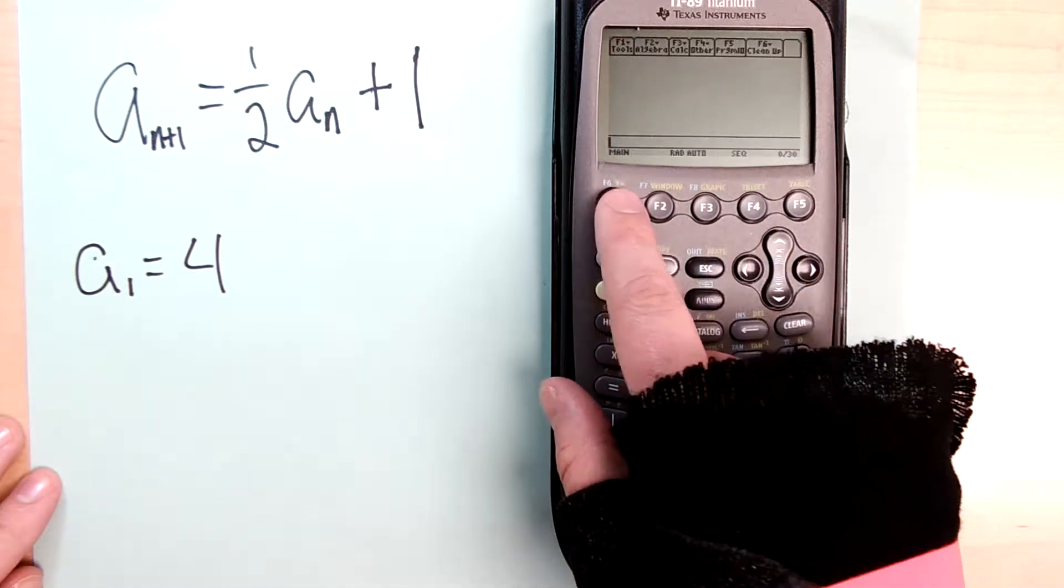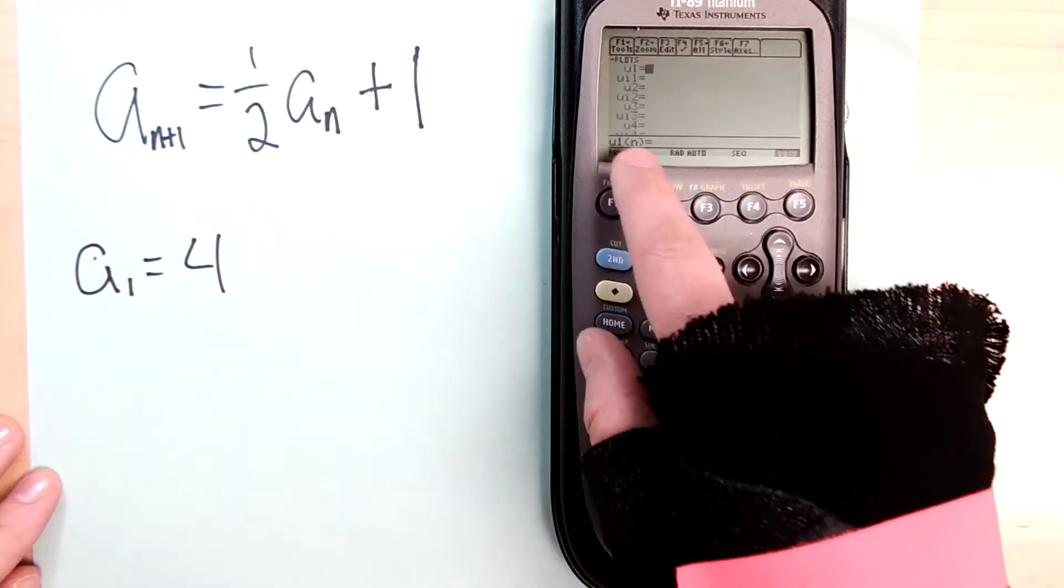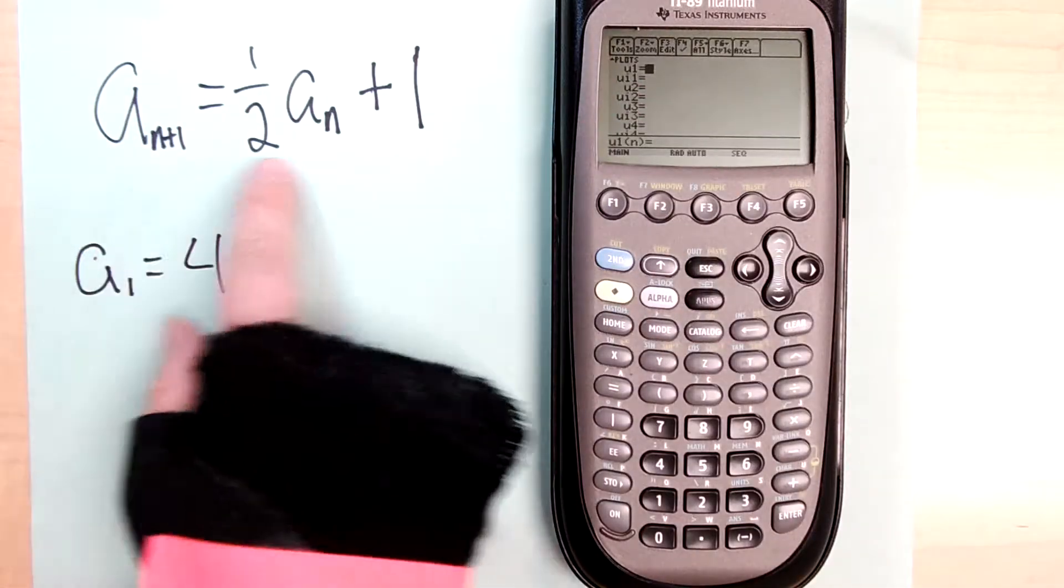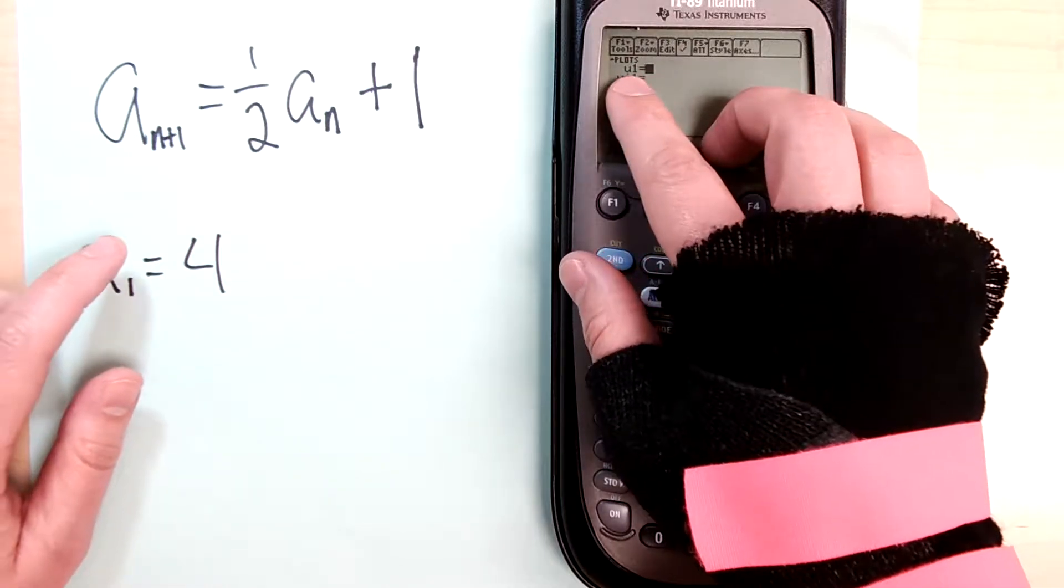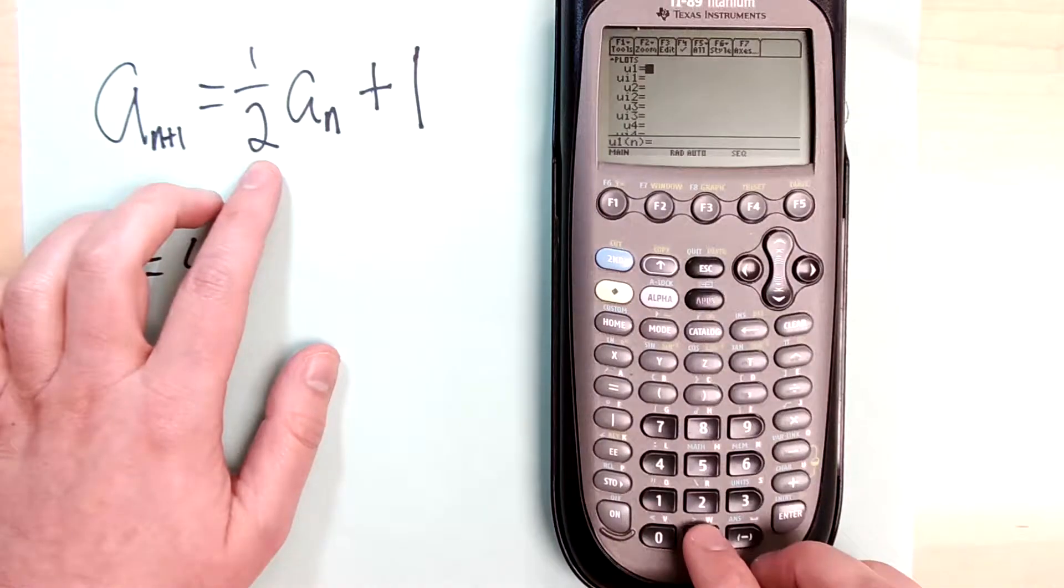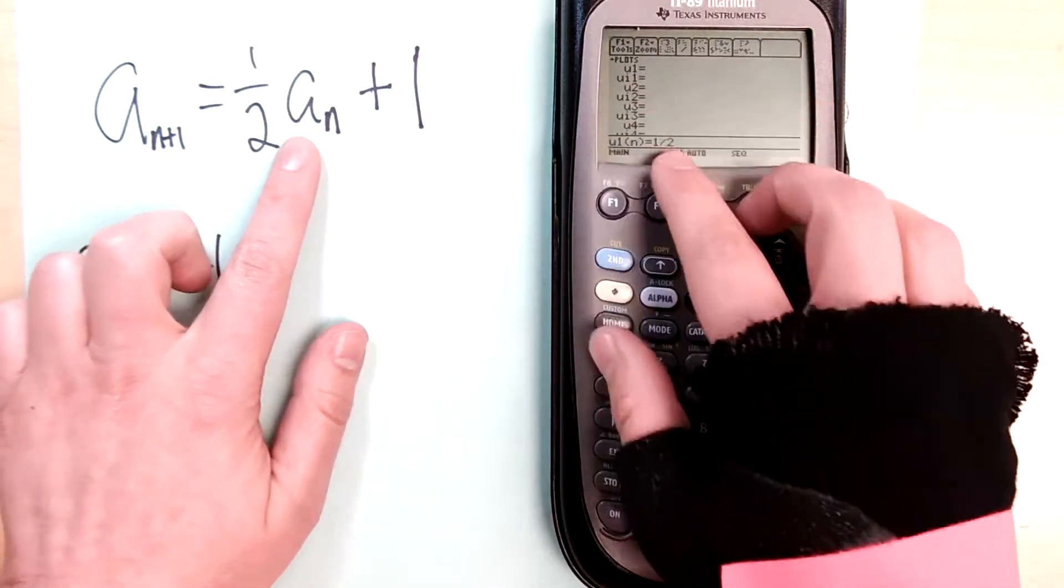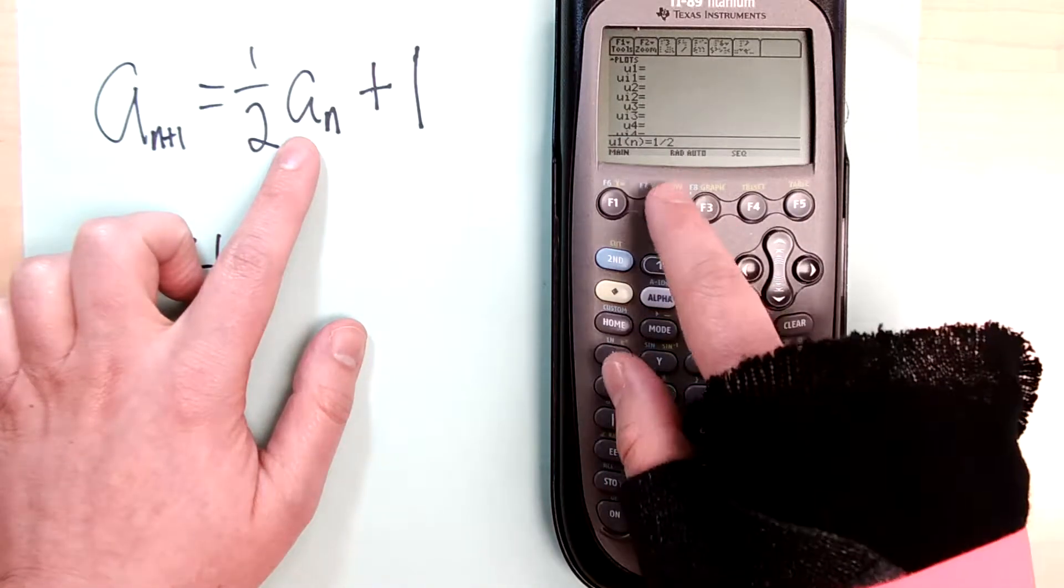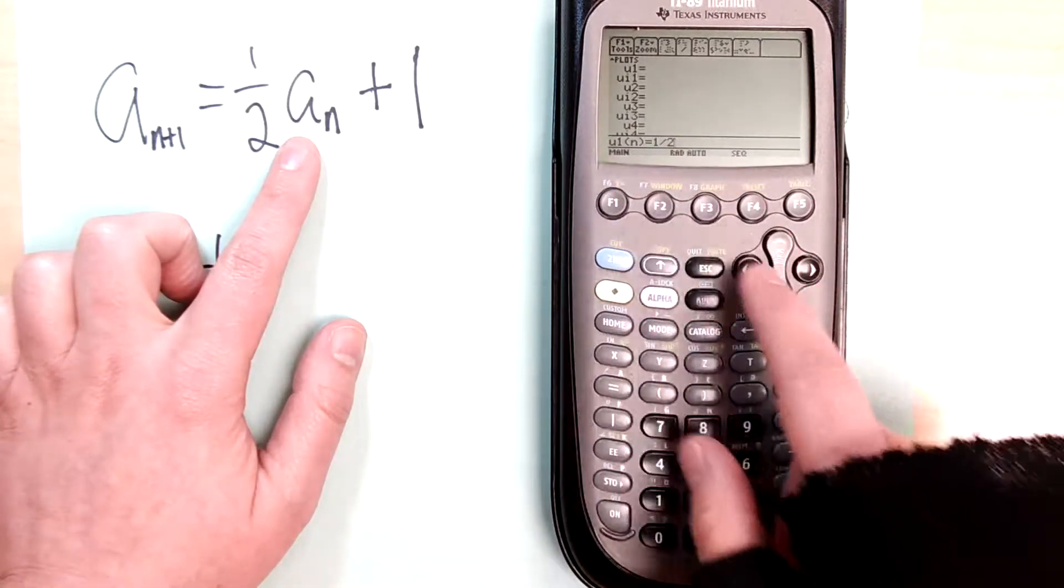Then you're going to go to the y-equals button. Press diamond F1 to get into the editor. I want it to look like this: we're defining u1. I need it to be one-half, so one divided by two, one-half of my previous term. My previous term is u1(n-1) because we're doing this to the nth term.